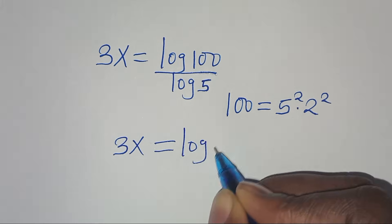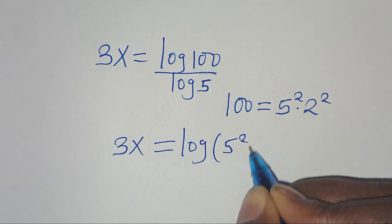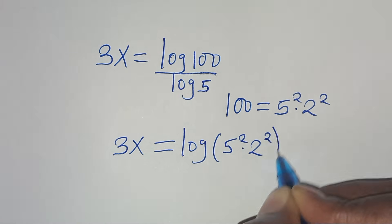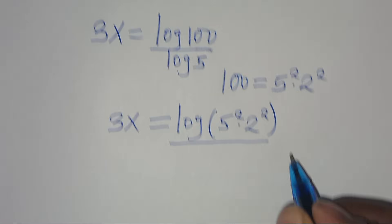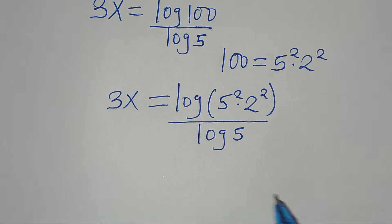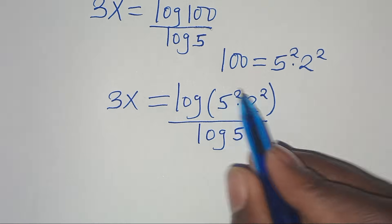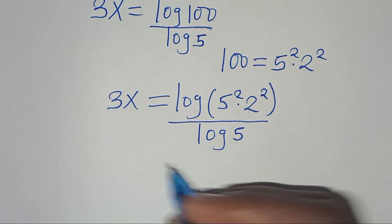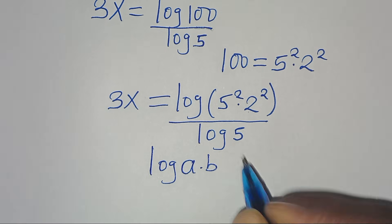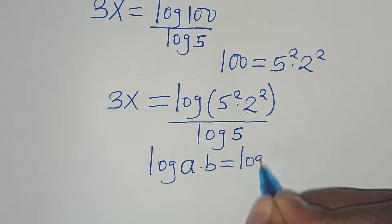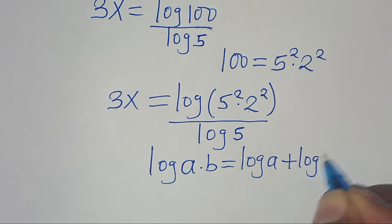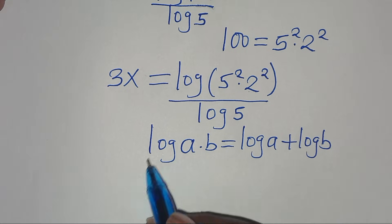So we have 3x equals log of 5 squared times 2 squared, all divided by log 5. Now log of 5 squared times 2 squared is in the form of log of a times b, which we can express as log a plus log b.